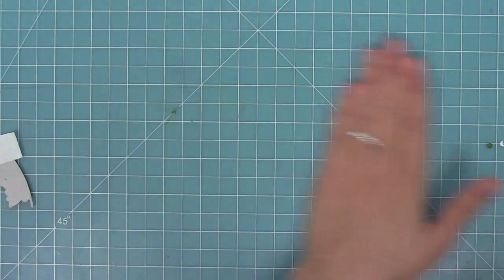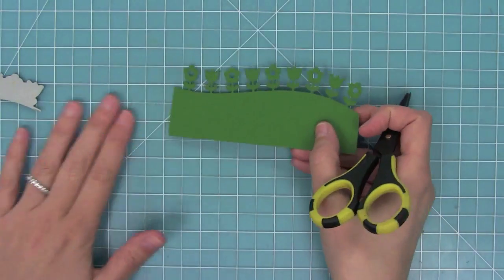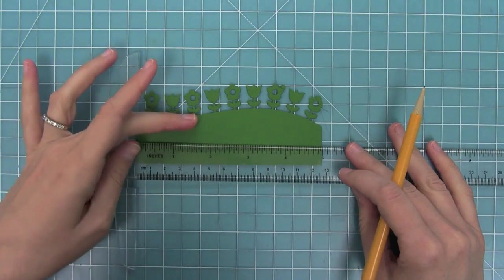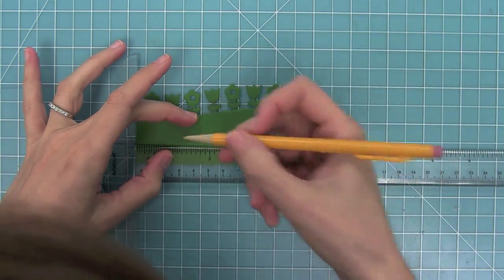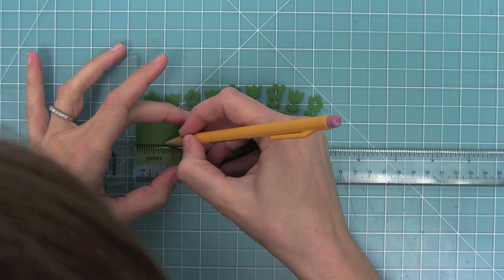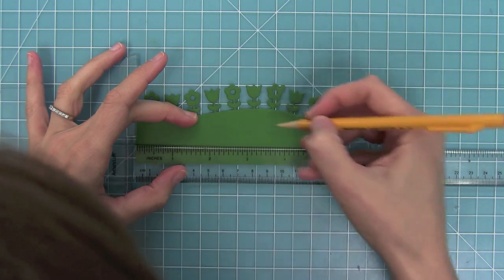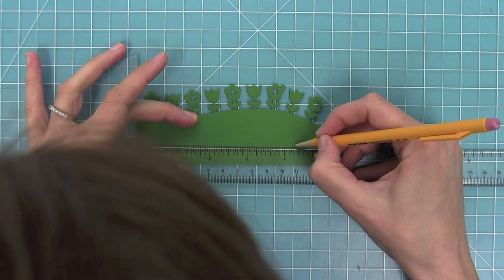I'm just going to go ahead and punch out all of the pieces, and now I'm ready to start working on the penny slider. I'm using my ruler here and I'm going to make a mark at three-quarters of an inch from the left side and three-quarters of an inch from the right side.